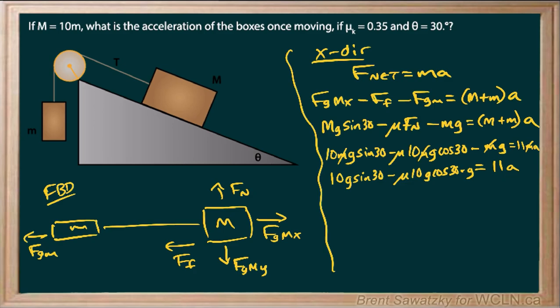So at this point we're pretty much ready to plug into our calculator. We could say this is 10 G sin 30 minus, and our Mu, our Mu was 0.35, 0.35 times 10 times G cos 30 minus G, and that's all over 11. So quite a bit to stick in the calculator there, but we can do such, and what we come out with is 0.86 meters per second squared.